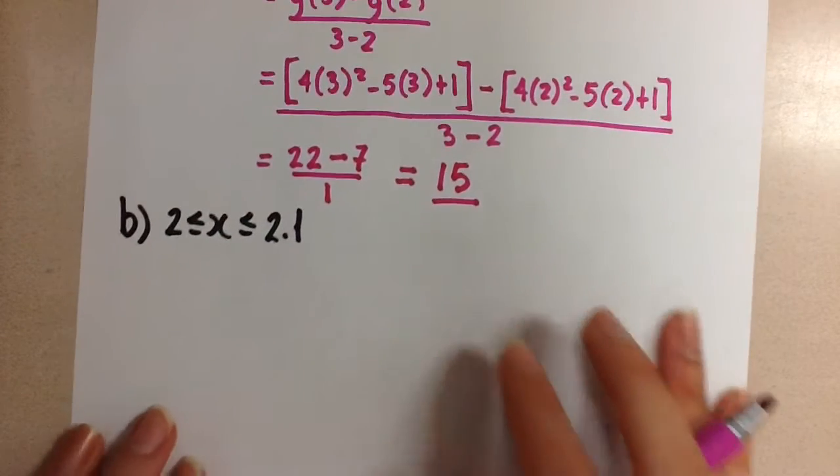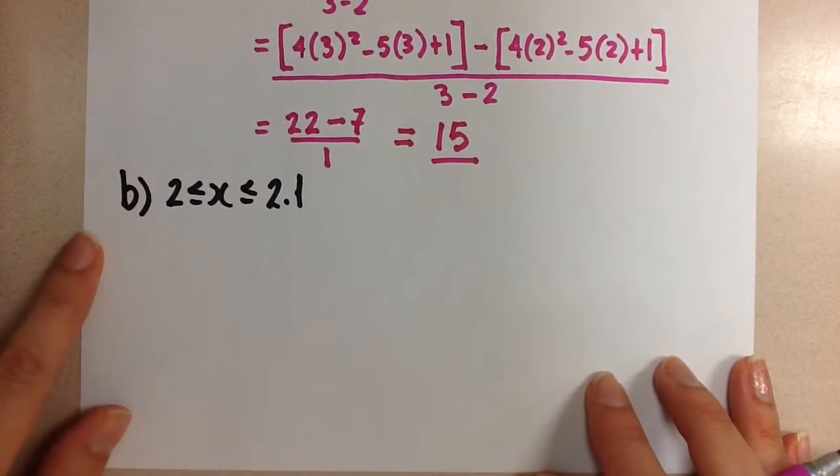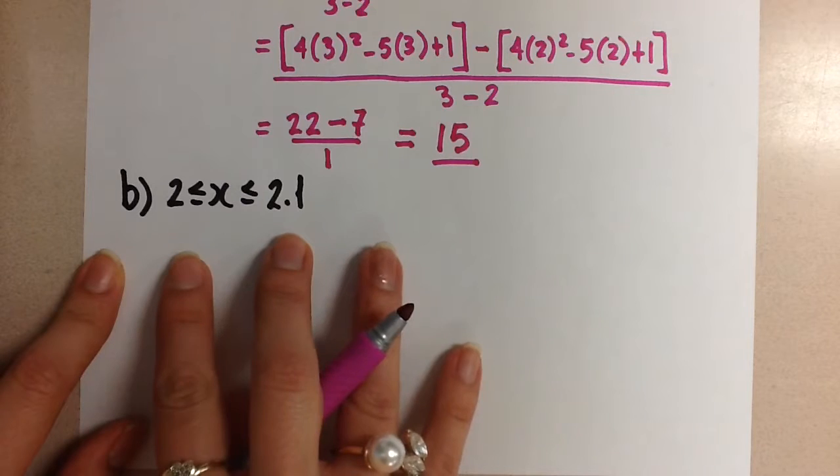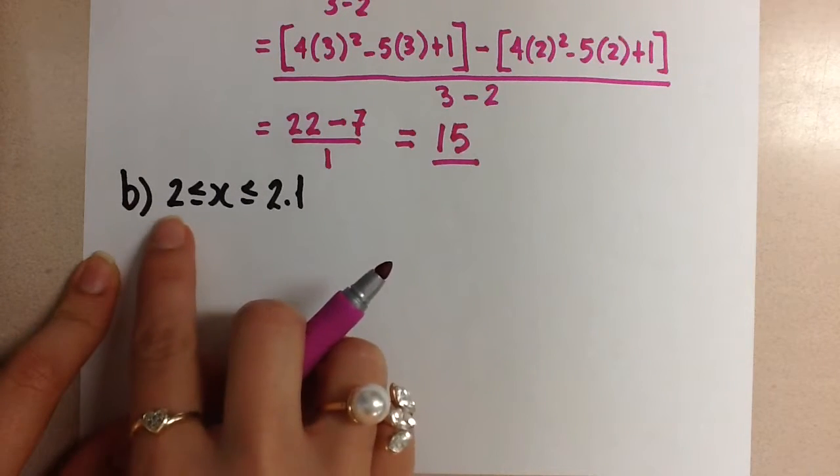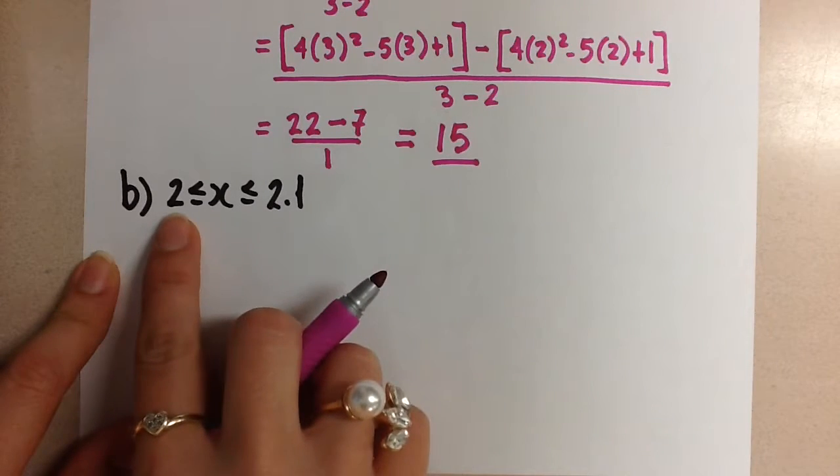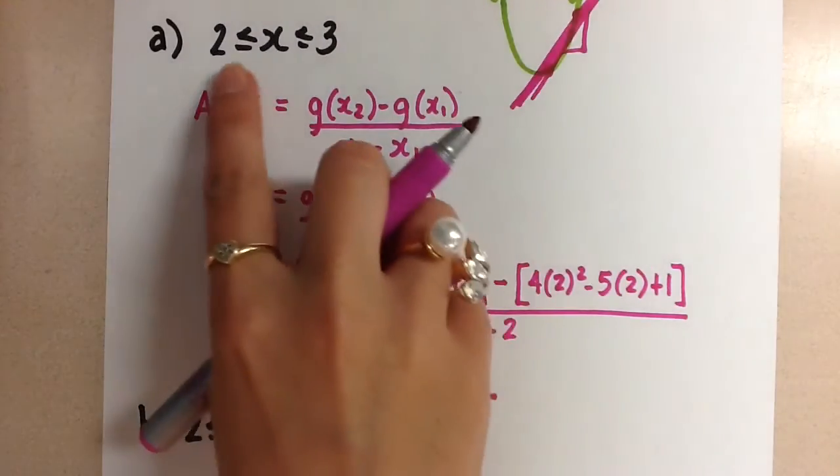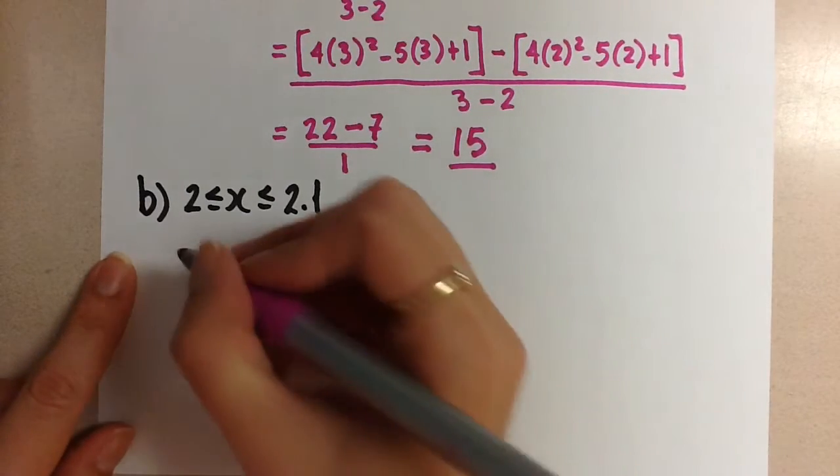Let's just do this one more time for a smaller interval. So if we have a smaller interval, we do it in the same way. Now this interval is going to give us a more accurate calculation for the rate of change at the x value 2 because it's closing in on that x value 2, compared to the interval here between 2 and 3, which is a large interval.